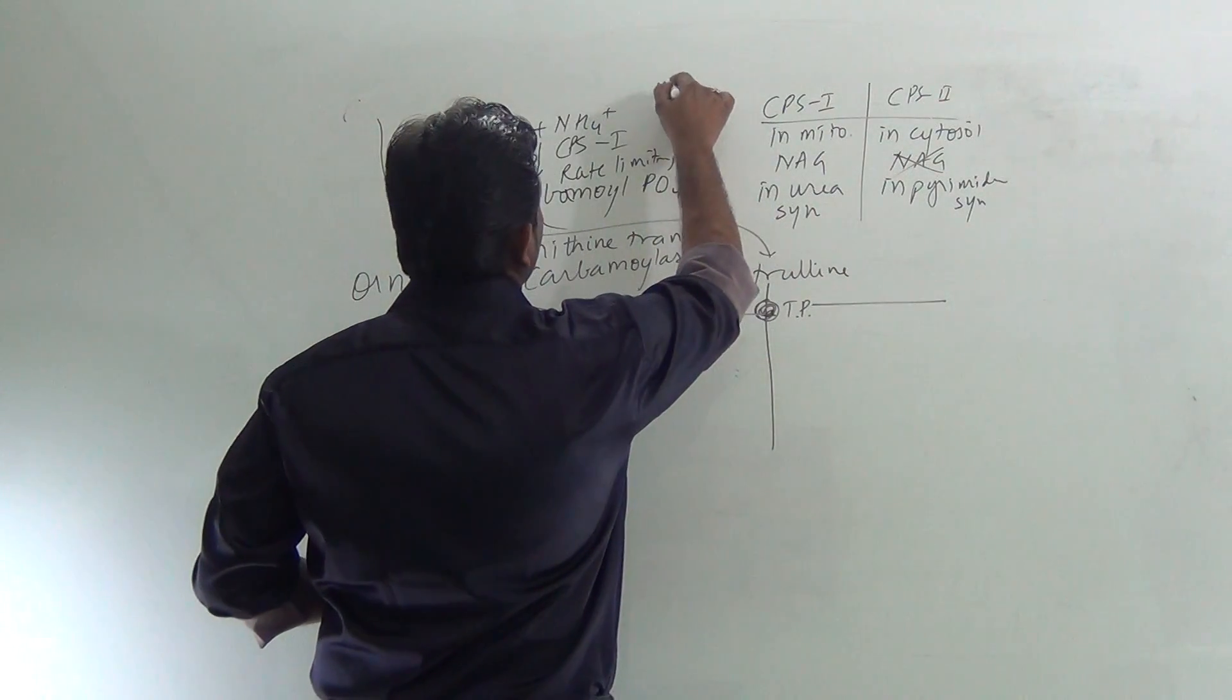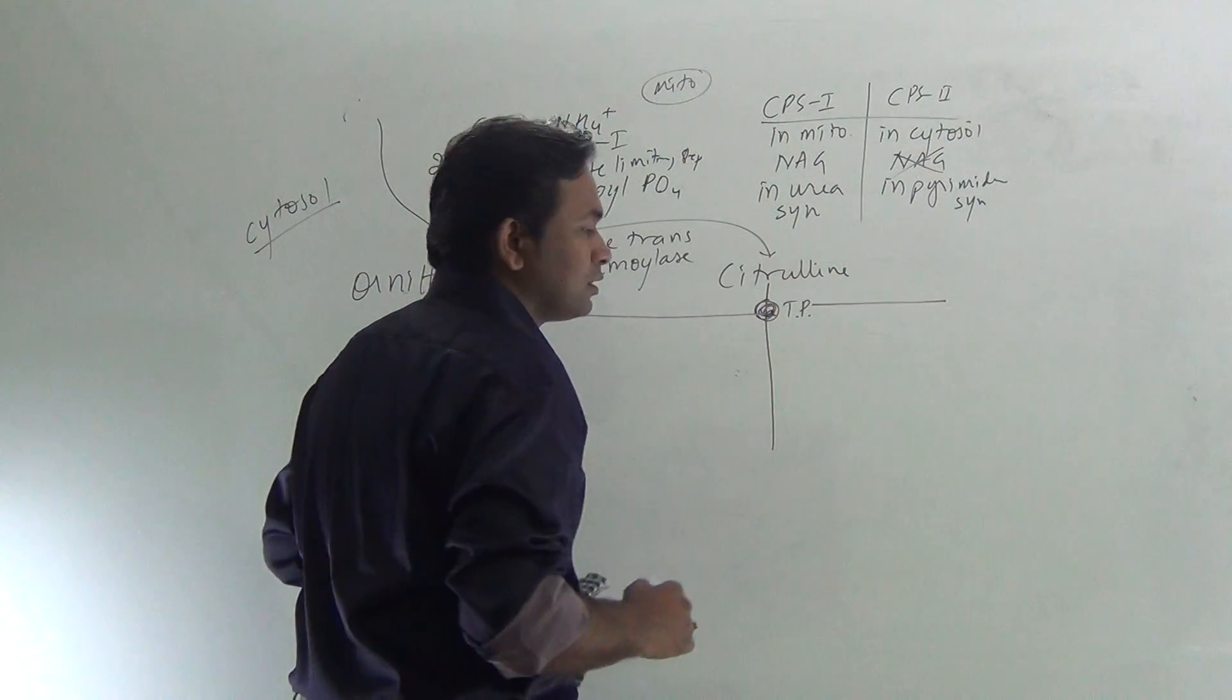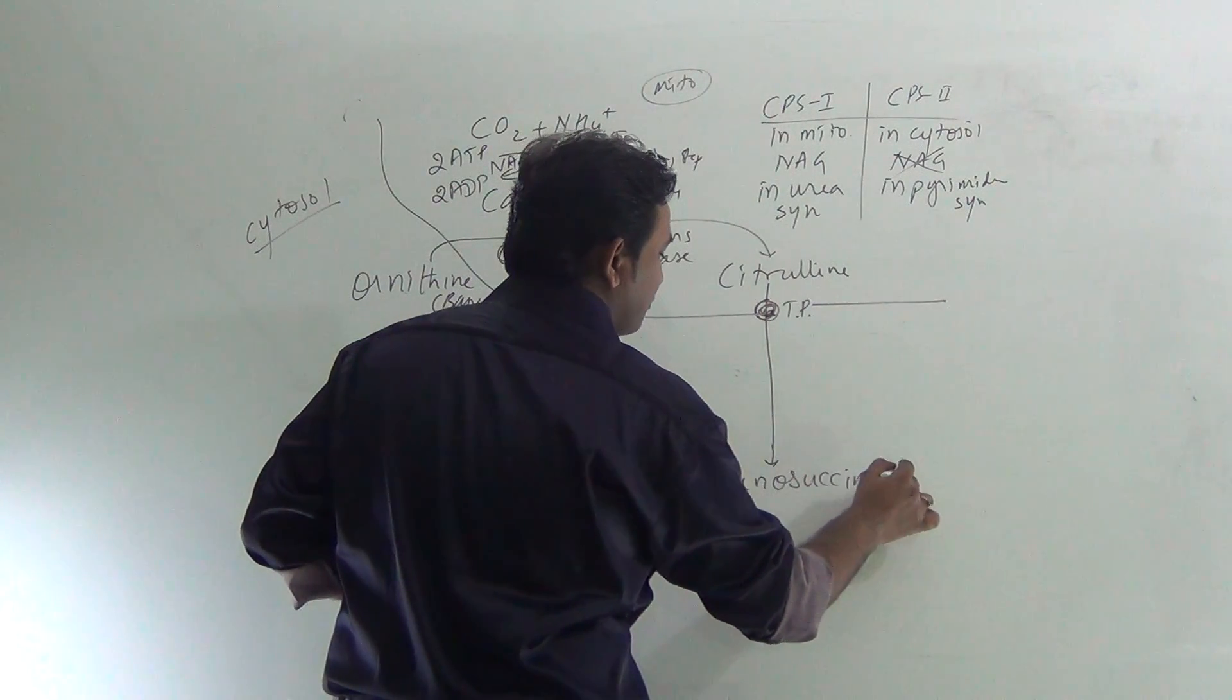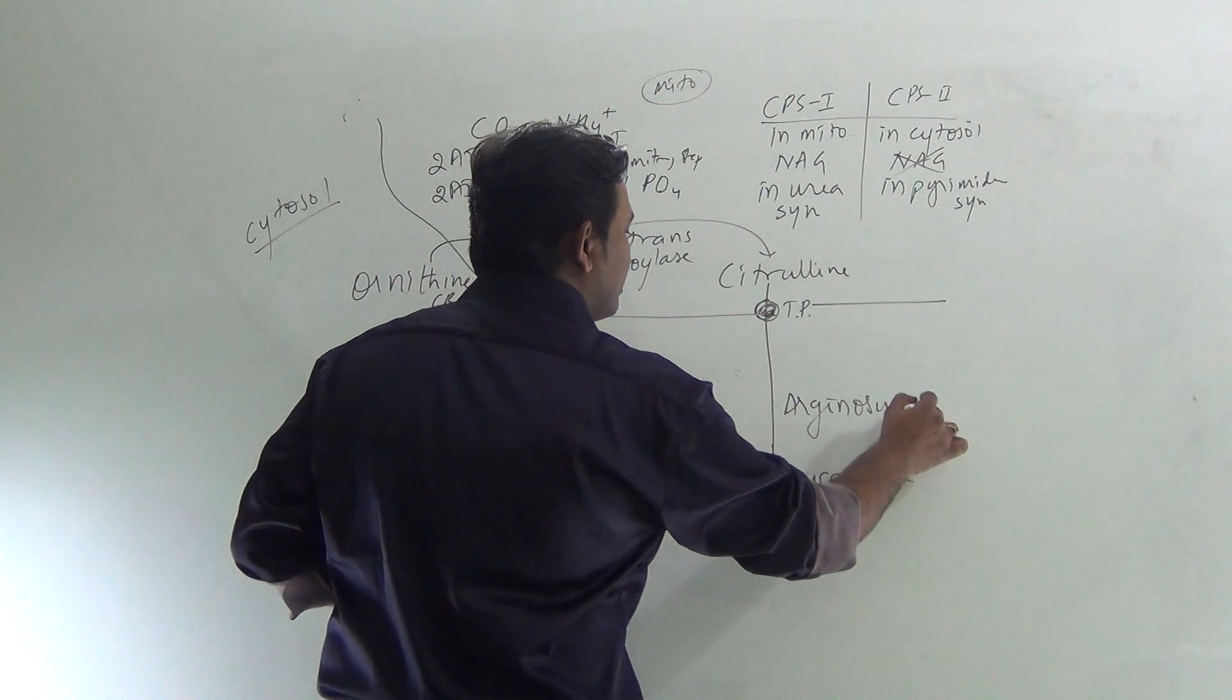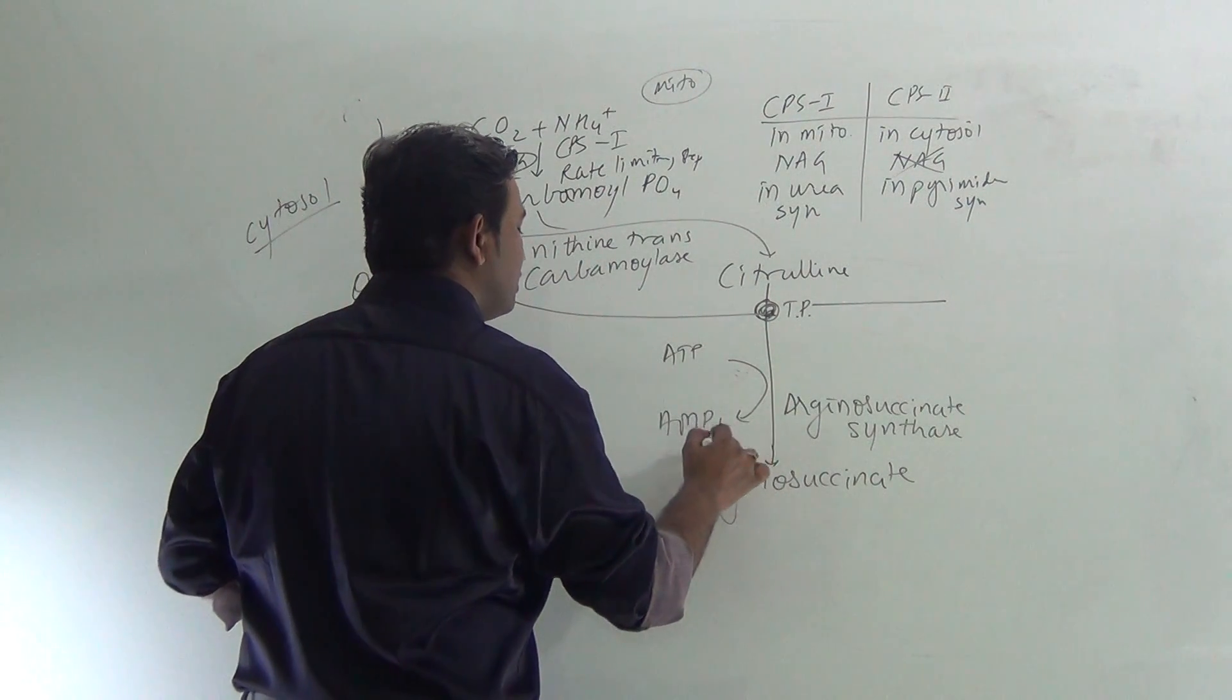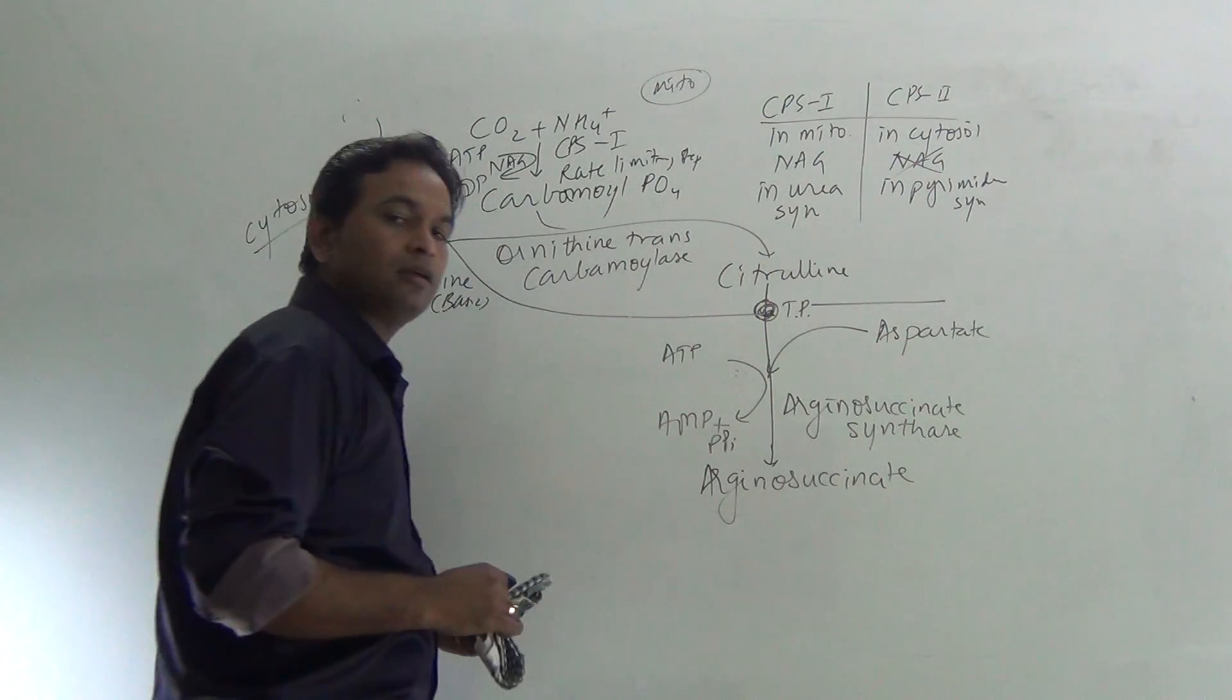This is all the region of mitochondria, and here the region of cytosol. The citrulline crosses the mitochondria and enters the cytosol, and it is converted to argininosuccinate. The enzyme involved is argininosuccinate synthase. One ATP molecule is utilized, and one AMP plus PPi are formed. Also, one molecule of aspartate is being consumed.